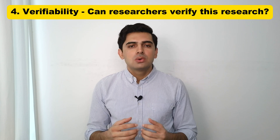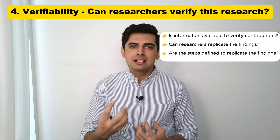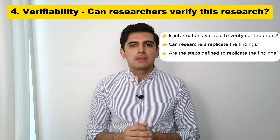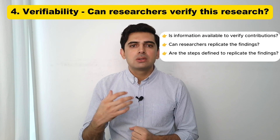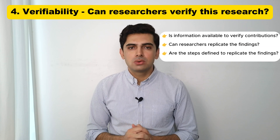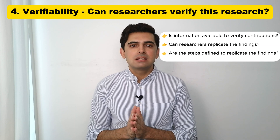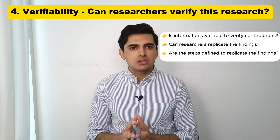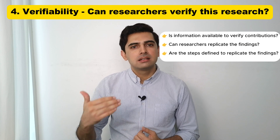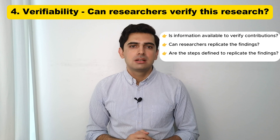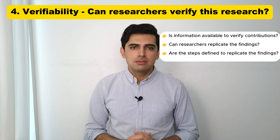Number four: Verifiability. This means whether other researchers can verify or replicate this research. In computer science, for example, we provide all the data and code along with the paper so that other researchers can replicate our findings. To assess replicability, focus on the methodology section — how well they have narrated their methodology and whether other researchers can follow it to produce the same findings.